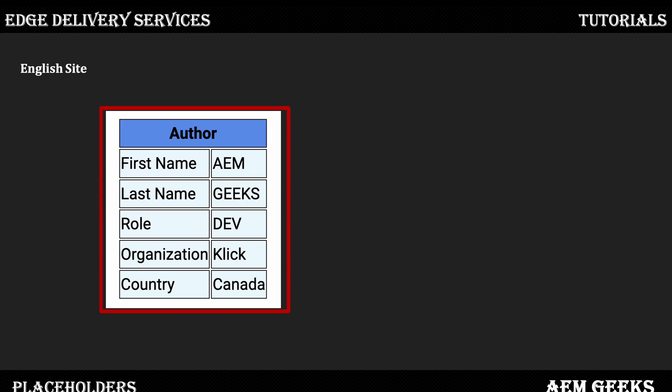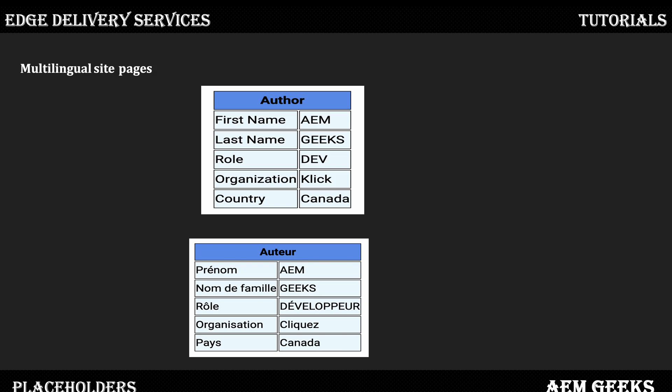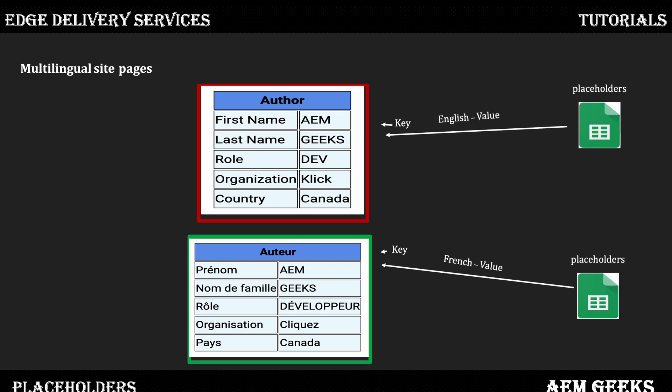Rather than storing or authoring that content in a table, what I do is store that content in placeholders. I store that content in two different spreadsheets — one for English and one for French. If I'm on English, the values are fetched from the English spreadsheet; if I'm on French, the values are fetched from the French spreadsheet. It's completely your choice — you can have only one spreadsheet and based on some logic fetch your values.